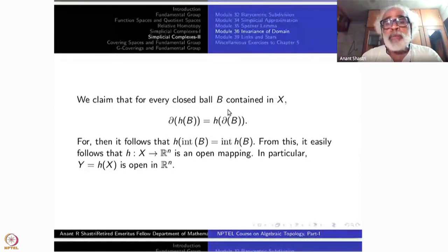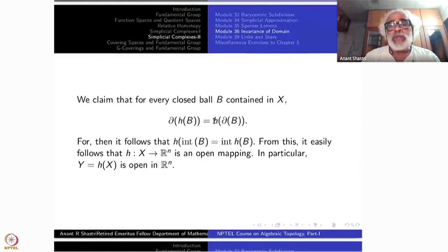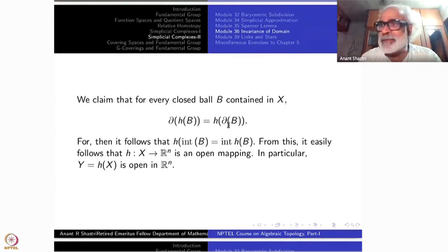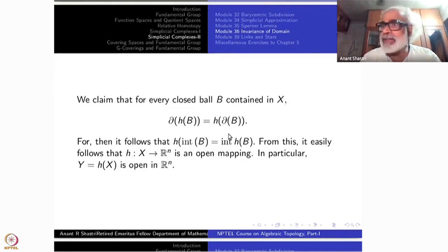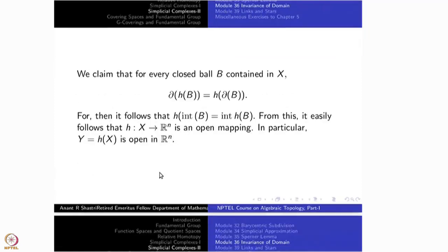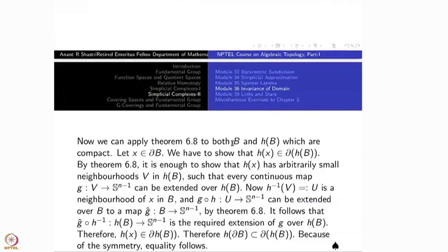Now, the closed ball B is a compact set. H restricted from B to H(B) is a homeomorphism. Therefore I can apply the previous theorem for compact subsets. Theorem 6.8 was for compact subsets. That is how this problem for arbitrary X is reduced to compact subsets — that is the key. So now we can apply 6.8 to both B and H(B), which are both compact.